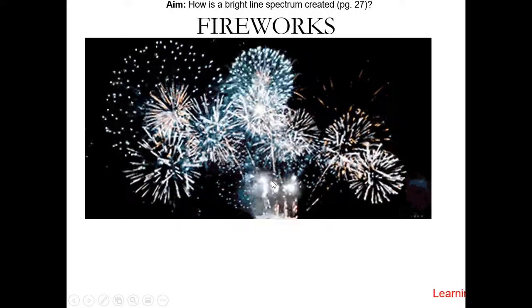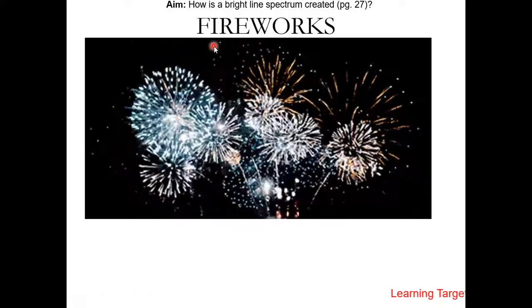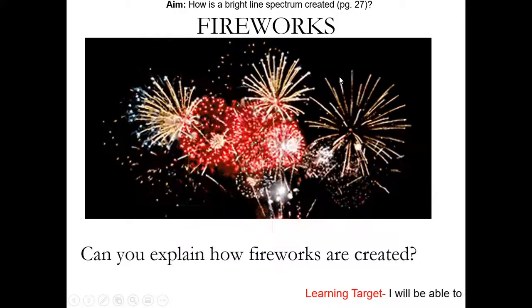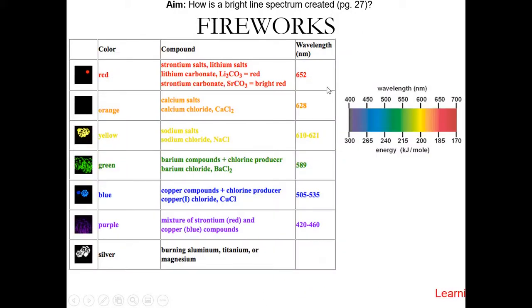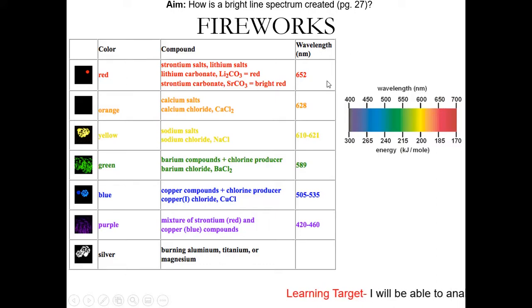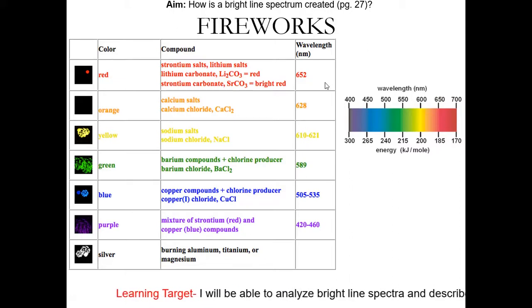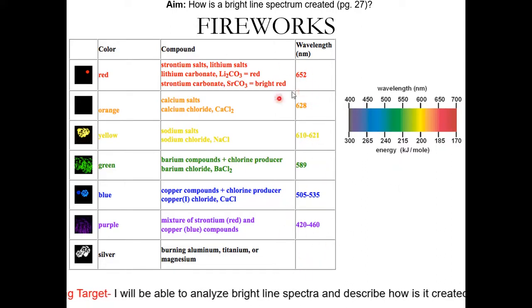Now we're going to talk about the motivation. Hopefully you got the chance to think about how fireworks work. Fireworks work the same way as the bright light spectrum. When the fireworks explode, the atoms in the rocket become excited. Then they go back to the ground state, releasing energy in the form of light. That light can come in different wavelengths — that's why they are different colors.